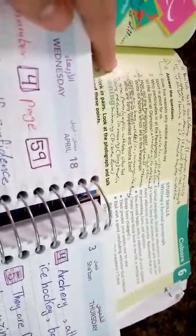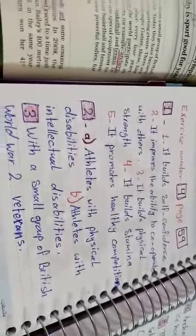Now, look at question number 2. Who participates in A. The Paralympics B. The Special Olympics. A. Athletes with Physical Disabilities B. Athletes with Intellectual Disabilities.